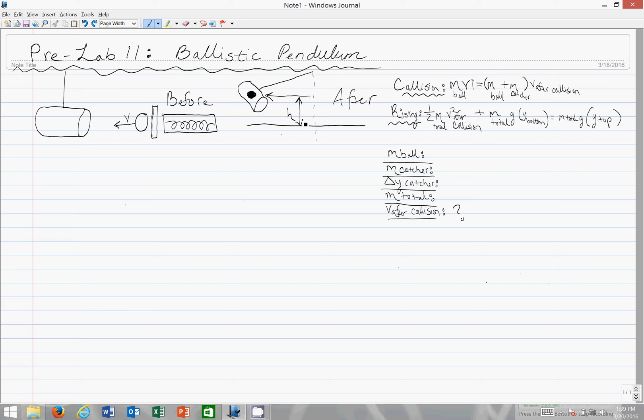The faster the ball goes, the higher it will swing, and so you're able to figure out the initial velocity of the ball when it was launched based on measuring how high this swings.